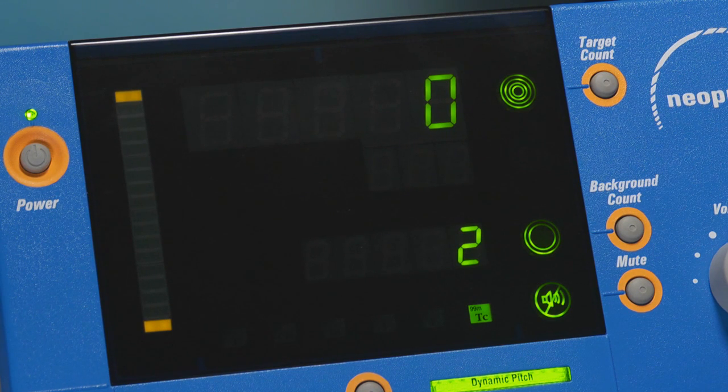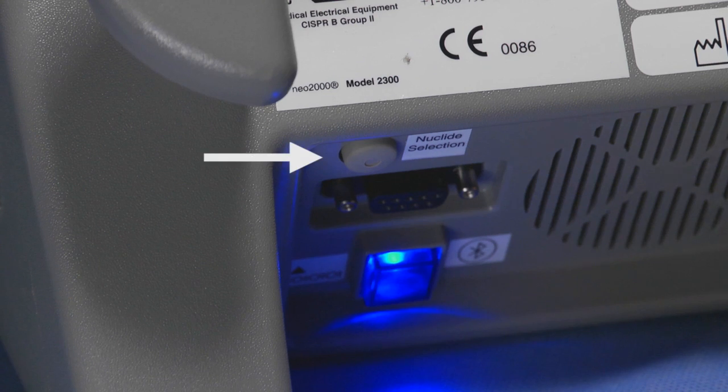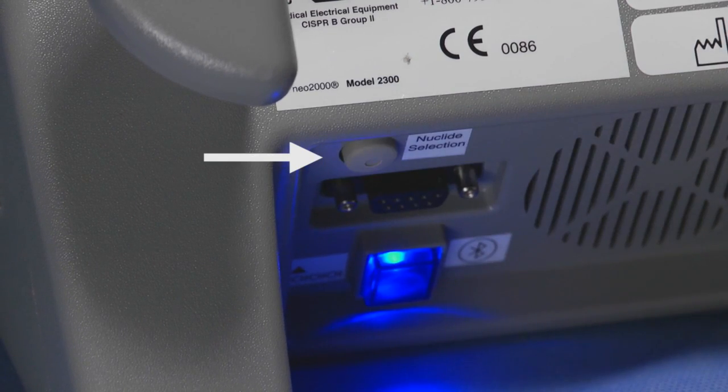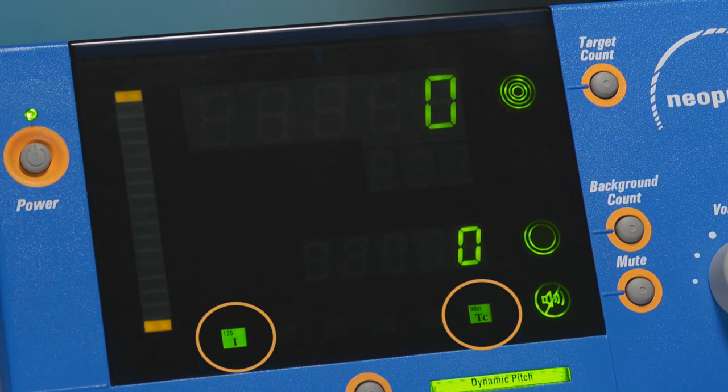Dual isotope mode is selected by pressing the radionuclide button on the rear of the unit once. Both I-125 and Tech-99 radionuclide indicators are illuminated.